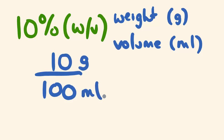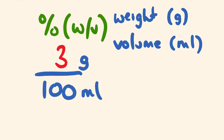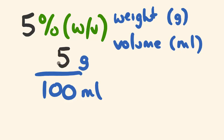So say for instance, if you had 3% W/V, it would become 3 grams per 100 mils. And if this was 5% W/V of an active ingredient, it would become — you guessed it — 5 grams per 100 mils. This part stays the same; it's only the percentage number up here that changes the amount of grams.